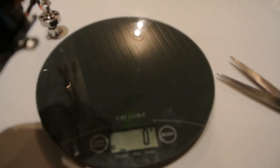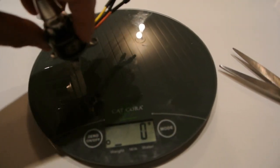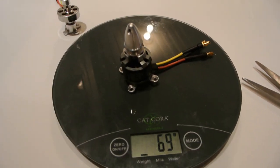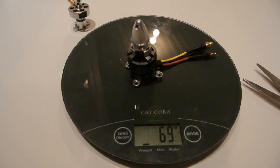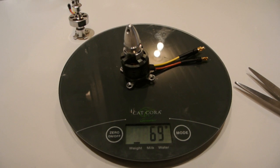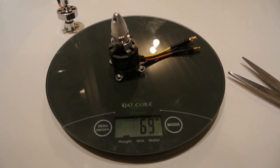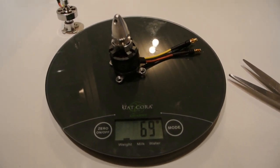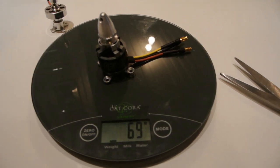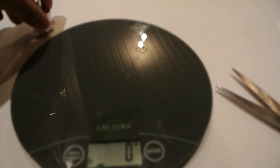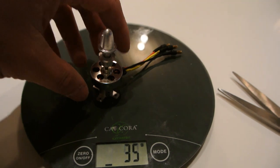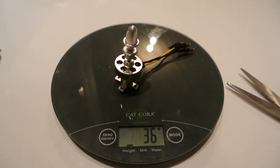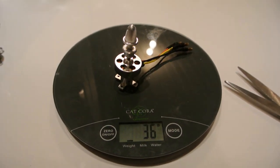Now I know we're not comparing apples to apples, but this will just give you an idea between all the different motors. This is the NTM prop drive 1200 KV 2826, and that comes in at just under 70 grams. And the Hextronic comes in at 36 grams with the prop adapter.